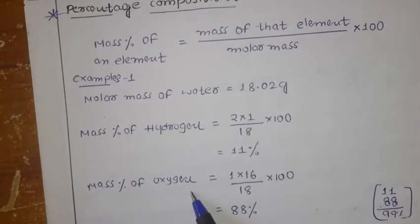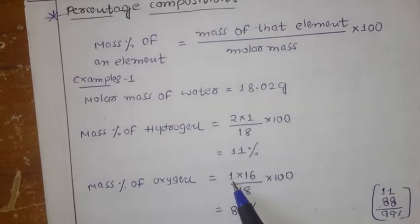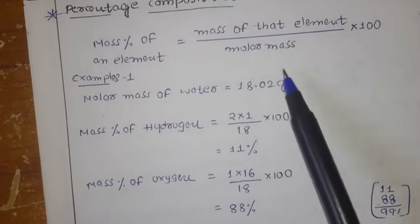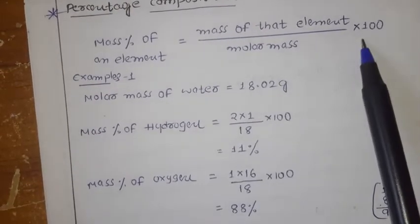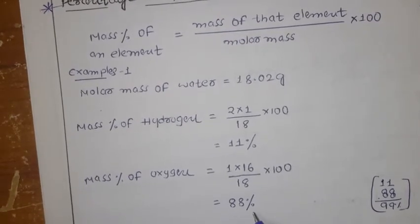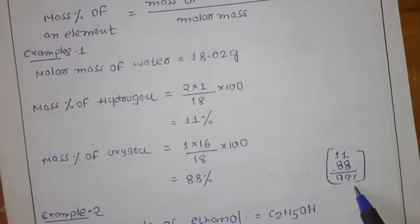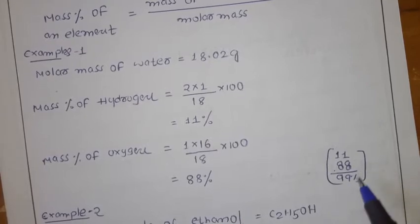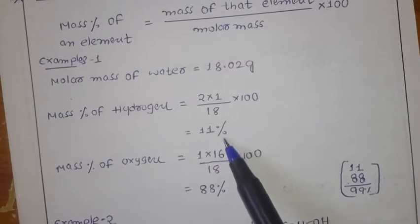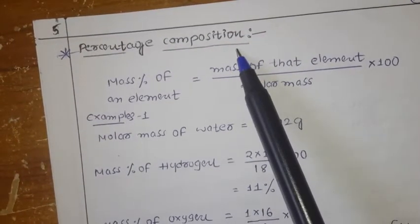Now, the mass percentage of oxygen: in H₂O we have only 1 oxygen, and the atomic weight of oxygen is 16. So 16 divided by 18 into 100 gives us 88%. If you add the hydrogen percentage and oxygen percentage together, we get approximately 99%, which we can consider as 100%. So in 100%, 11% is hydrogen and 88% is oxygen.